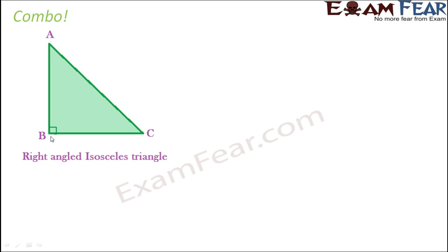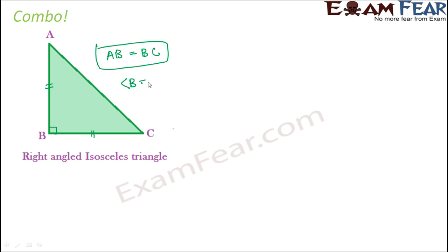We have one angle as 90 degrees. But at the same time, in the same triangle, we also see that the length of side BC is equal to the length of side AB. So AB is equal to BC, and angle B is equal to 90 degrees. Since both conditions are true for the same triangle, this triangle is a right angle triangle and also an isosceles triangle. So together, this triangle is a right angled isosceles triangle.